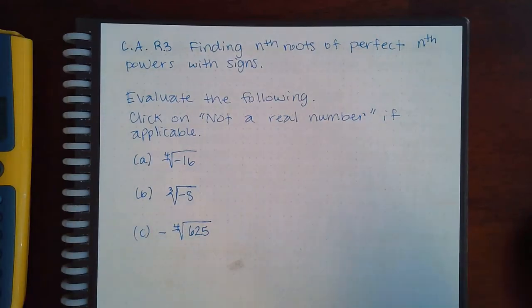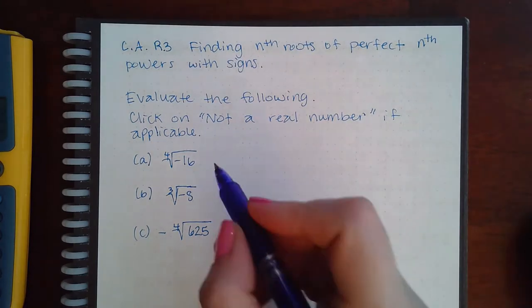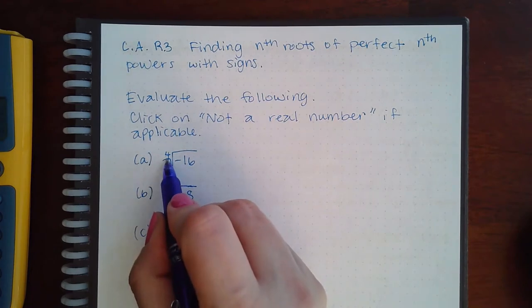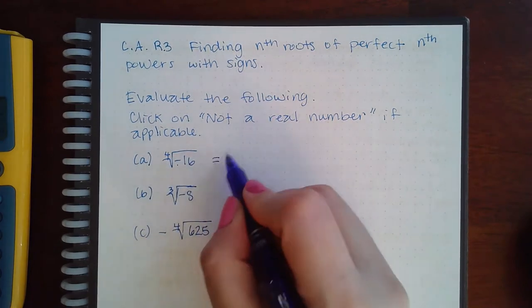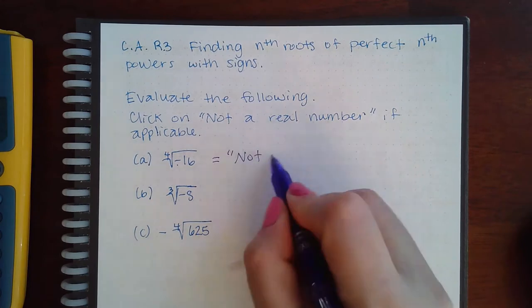Now here we have a college algebra review topic, which means it's an intermediate algebra topic: finding nth roots of perfect nth powers with signs. Remember the rule: if the index is even and the value inside is negative, then the response is not a real number.